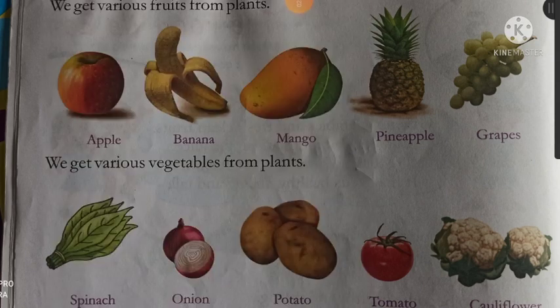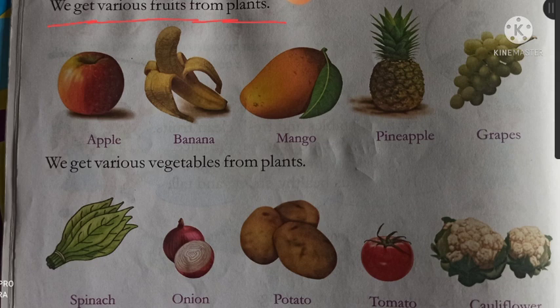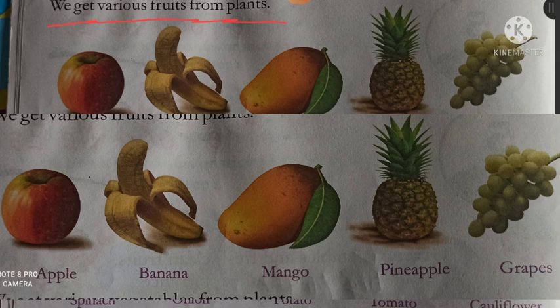We get various fruits from plants. Hum kai tarah ke fruits paudhon se prapt karte hain. Apple — seb, banana — kela, mango — aam, pineapple — ananas, grapes — angoor. Ye saare fruits hum log paudhon se prapt karte hain.